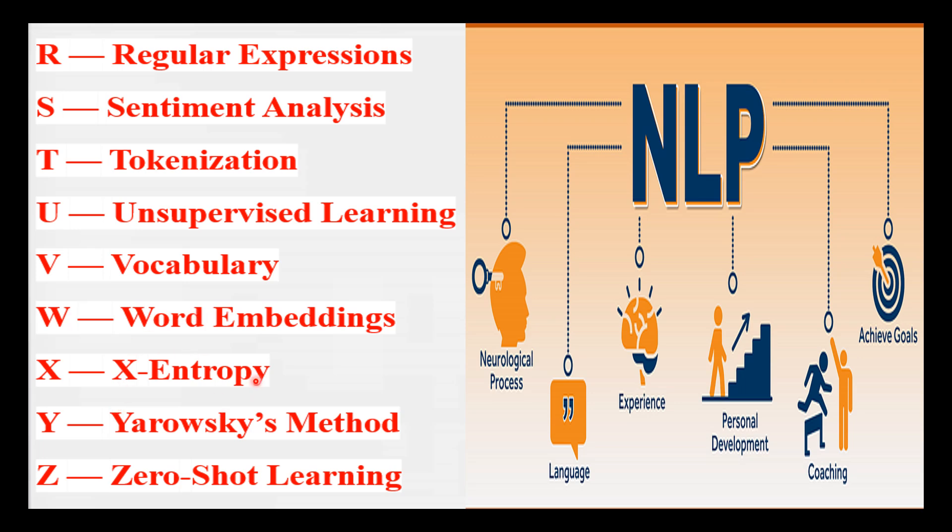X is for Cross-Entropy — a measure of the difference between two probability distributions, often used as a loss function in machine learning. In NLP, cross-entropy is used in training models like language models and neural machine translation.